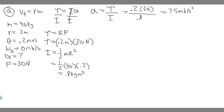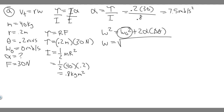Now we can solve for omega using the rotational kinematic equation: ω² = ω₀² + 2α·Δθ. Since it starts from rest, ω₀ = 0, so that term cancels. Taking the square root of both sides: ω = √(2 × 7.5 × Δθ). But keep in mind theta must be in radians, and they gave it to us in revolutions, so we need to convert.